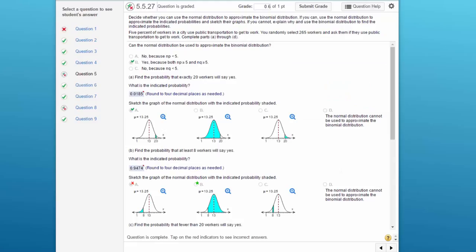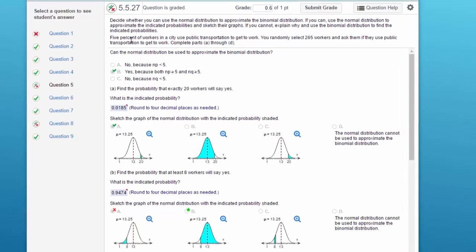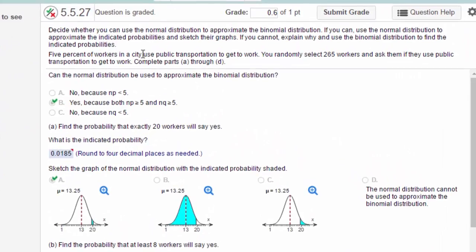Pamela, this is another problem that you had trouble with on that quiz, and it has to do with the use of the normal approximation to the binomial distribution. I am not really sure what you did wrong, but let's go through and see how to solve this. We are given that 5% of the workers in the city use public transportation. We randomly select 265 and we ask them do they or do they not use public transportation.